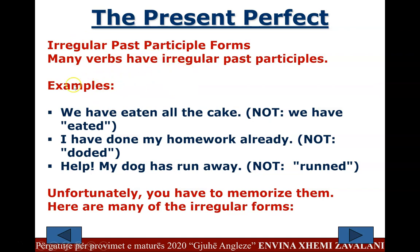Now, irregular verbs with the present perfect: some verbs don't follow the regular rules and must be memorized. 'We have eaten all the cake' — not 'eat.' 'I have done my homework already' — not 'do.' 'My dog has run away' — not 'run' (infinitive). Unfortunately you have to memorize irregular past participles.